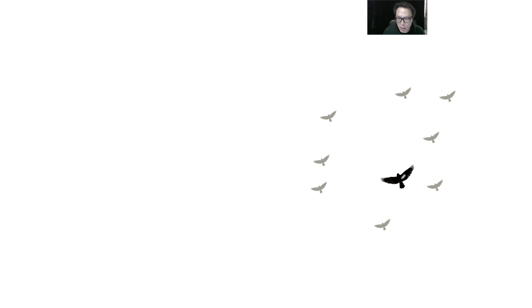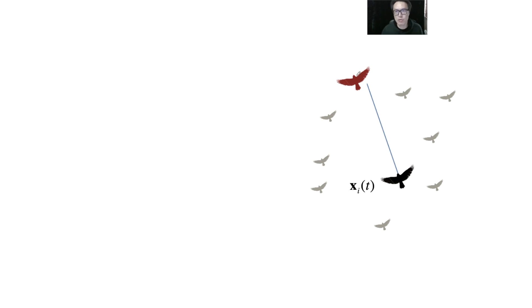When we focus on a particular bird, what I'm going to talk about applies to every bird. Once we determine the heading direction, we determine where to go and how far this bird is going to travel — that is the distance. We update the position of this bird using an update rule. I call this bird i, and at iteration t, in the next iteration t+1, it moves to a new point. So we determine the velocity such that it goes from the current point to the next point. That is the basic update rule for particle swarm optimization.